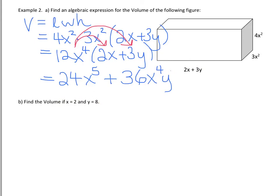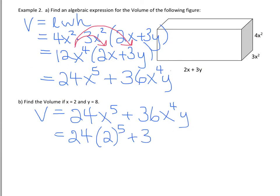So let's take those values and substitute them in. So from our simplified expression, we have 24x to the 5 plus 36x to the 4y. So we're going to have 24, we're going to substitute x for 2 to the 5 plus 36. And then we have 2 to the 4 times 8.